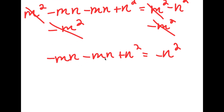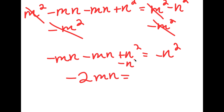Now, negative mn minus mn is equal to negative 2mn. And then if I subtract n squared on both sides, these two cancel out and I get negative 2mn is equal to negative 2n squared.